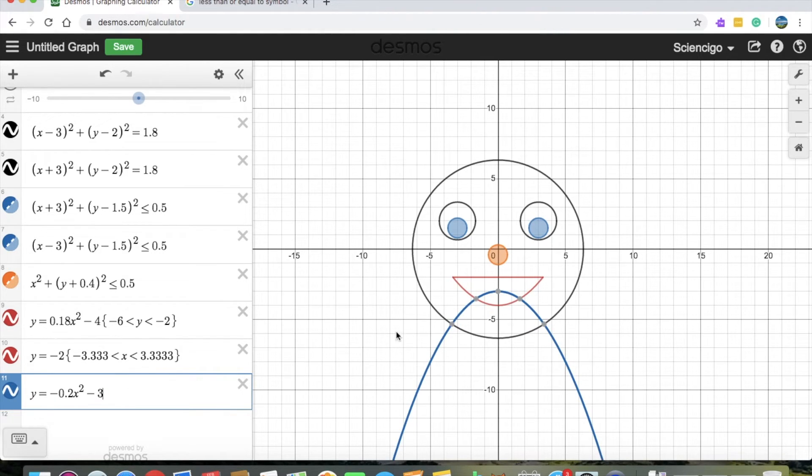So minus 2 because we want to shift it down. Minus 3. And how about negative 0.18 rather than 0.2 like we did before. And change this to 2.5? 2.7? Negative 2.75 is good.